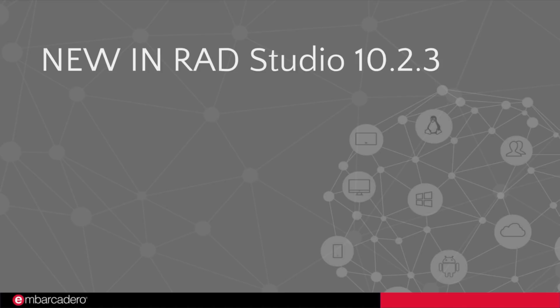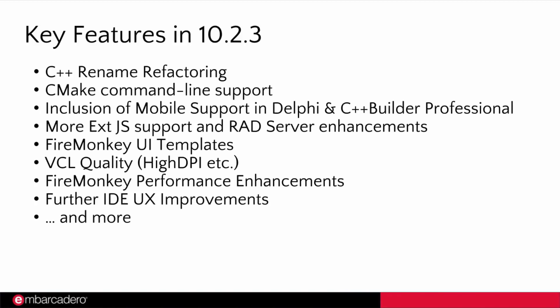We also added a dark IDE theme — a long-requested feature — so you can easily toggle between a light theme and a dark theme, plus a number of quality and performance enhancements. Now let's look at the key new features in RAD Studio 10.2.3: C++ Rename Refactoring, CMake Command Line Support, mobile support included in Delphi and C++ Builder Professional, expanded Sencha ExtJS support, RAD Server enhancements, 18 FireMonkey UI templates, VCL high DPI enhancements, FireMonkey performance enhancements, and further IDE UX improvements.